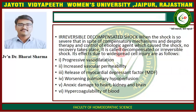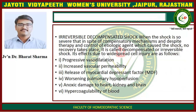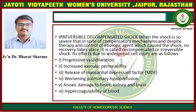The third stage is irreversible or decompensated shock. When shock is so severe that, in spite of compensatory mechanisms and despite therapy and control of etiologic agents, no recovery takes place, it is called decompensated or irreversible shock. Its effects due to widespread cell injury include progressive vasodilation, increased vascular permeability, release of myocardial depressant factor, worsening of pulmonary hypoperfusion, anoxic damage to the heart, kidney and brain, and hypercoagulability of blood.